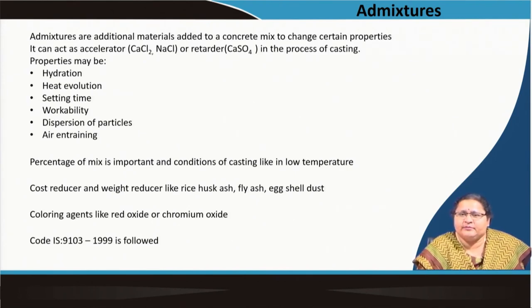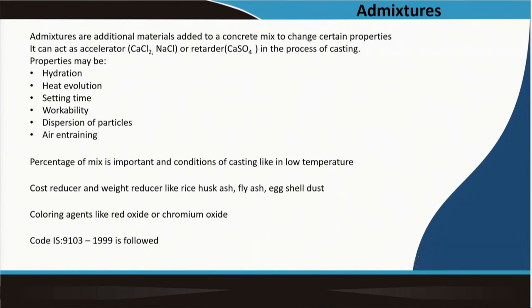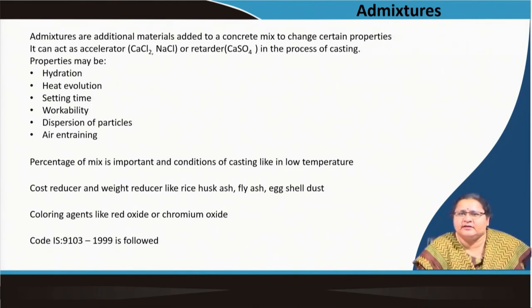Admixtures can air-entrain (bring air particles inside), act as colouring agents such as red oxide or chromium oxide, or serve as cost and weight reducers like fly ash, rice husk ash, and egg shell dust. These materials are silicates — containing 80 to 90 percent silicon dioxide — while egg shell dust contains calcium oxide. All of these finally help in the process of hydration and setting, and are used when required or recommended.